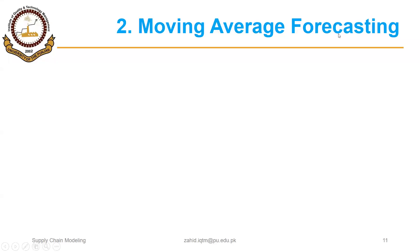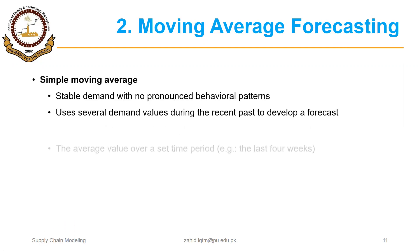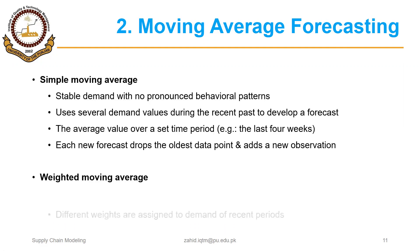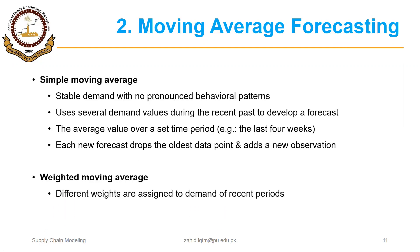In this segment we are going to discuss the second time series method for forecasting, that is moving average forecasting. We have two further methods: simple moving average and weighted moving average.